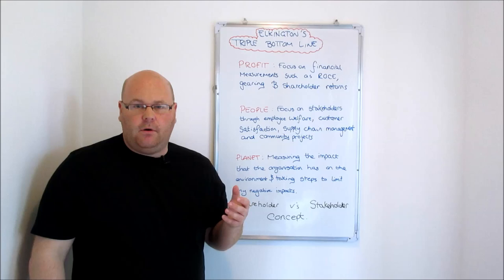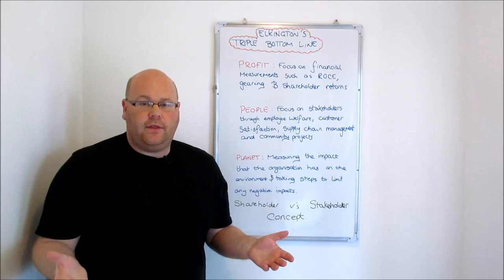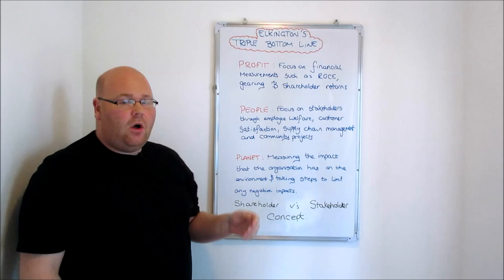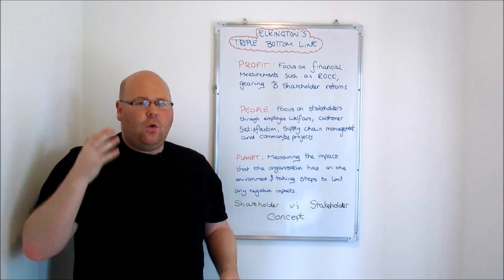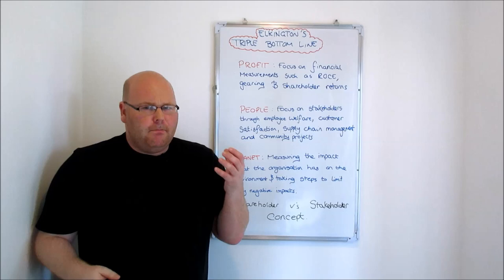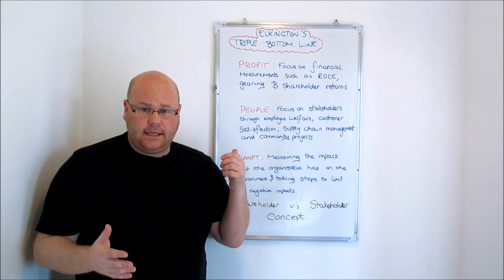The first of Elkington's Triple Bottom Line is a focus on profits. It's not like Elkington was denying that profits and shareholder rewards were important - he absolutely acknowledged that they were. So Elkington said businesses need to be focusing on things like shareholder returns and financial measurements like the ROCE or the gearing ratio of the organization. But in order to be sustainable, in order to appease to a changing landscape where consumers are becoming more and more ethically conscious, businesses can no longer just focus on the pursuit of profits.